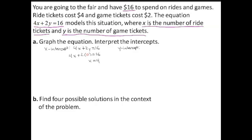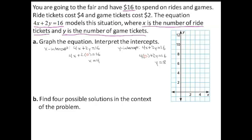To find the y-intercept, substitute 0 for x and solve for y. Substituting 0 for x gives 4 times 0 plus 2y equals 16, which simplifies to y equals 8. Now plot the points. The x-intercept is 4, so plot the point (4, 0). The y-intercept is 8, so plot the point (0, 8). Now draw a line segment connecting the points. Although x and y represent whole numbers, it is convenient to draw a line segment that includes points whose coordinates are not whole numbers.